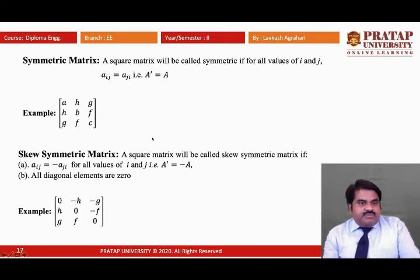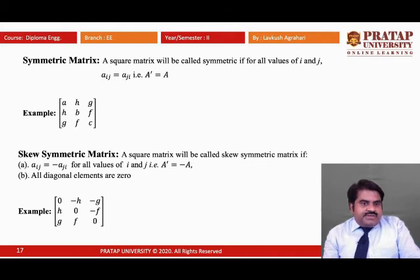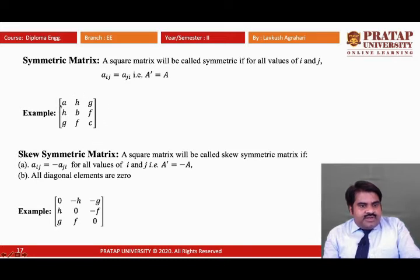Now, the symmetric matrix. A square matrix is called a symmetric matrix if for all values of i and j, Aij equals Aji — that is, if the matrix is the same as its transpose. In the given example, taking the transpose gives matrix A again, so this is a symmetric matrix.